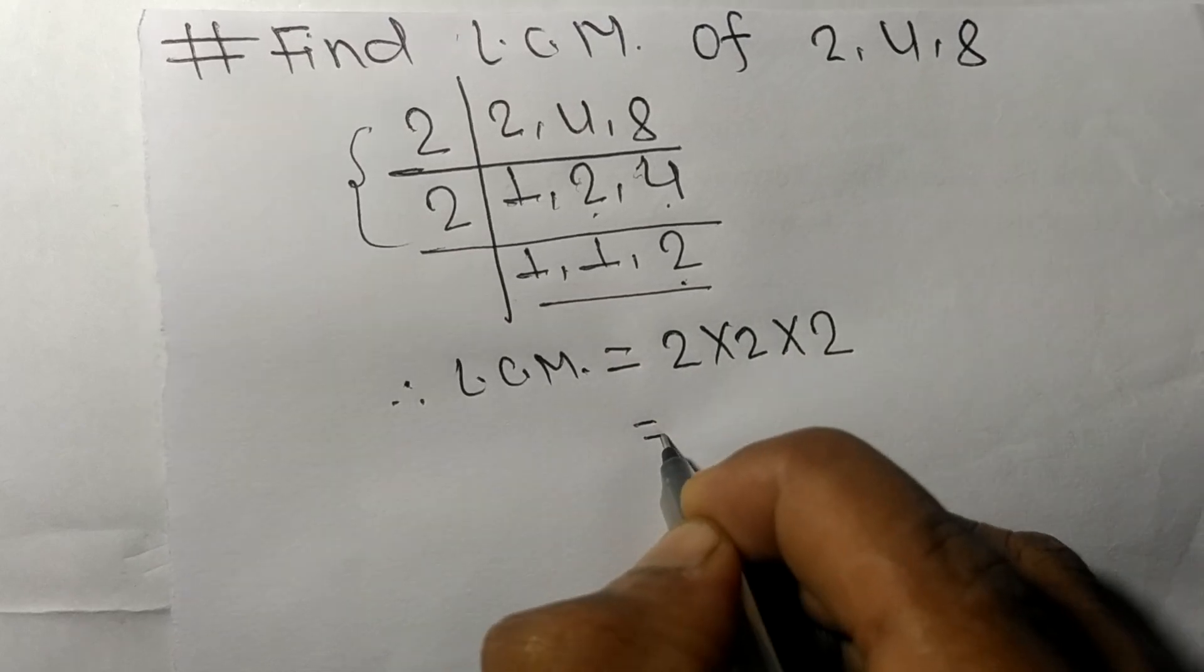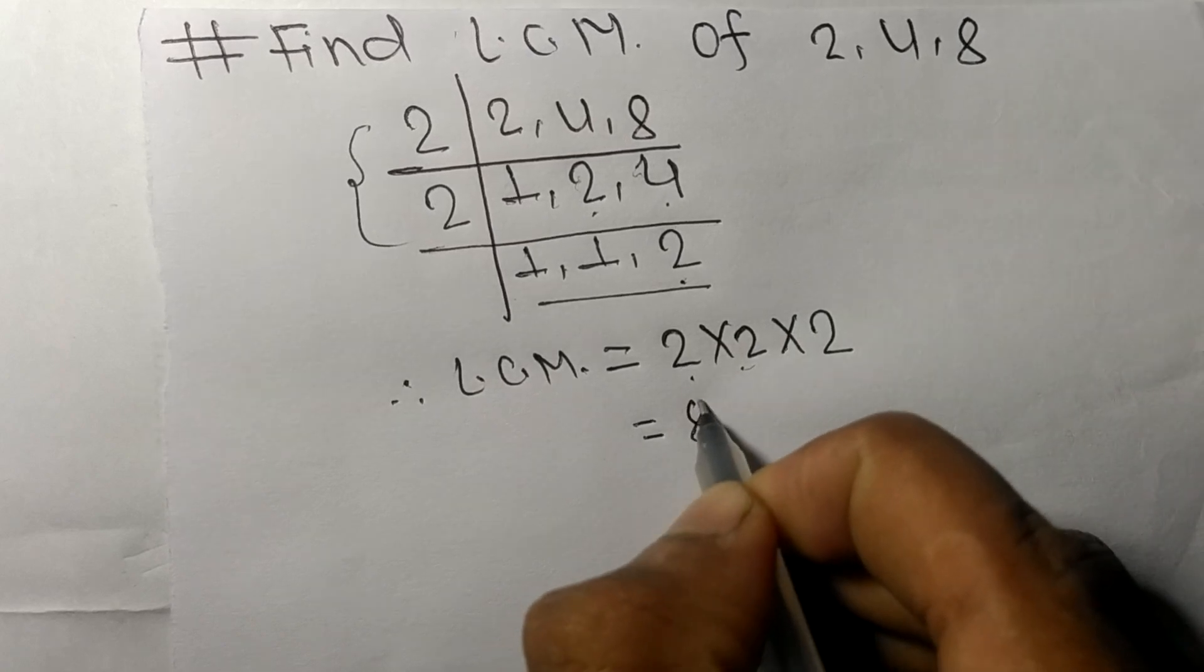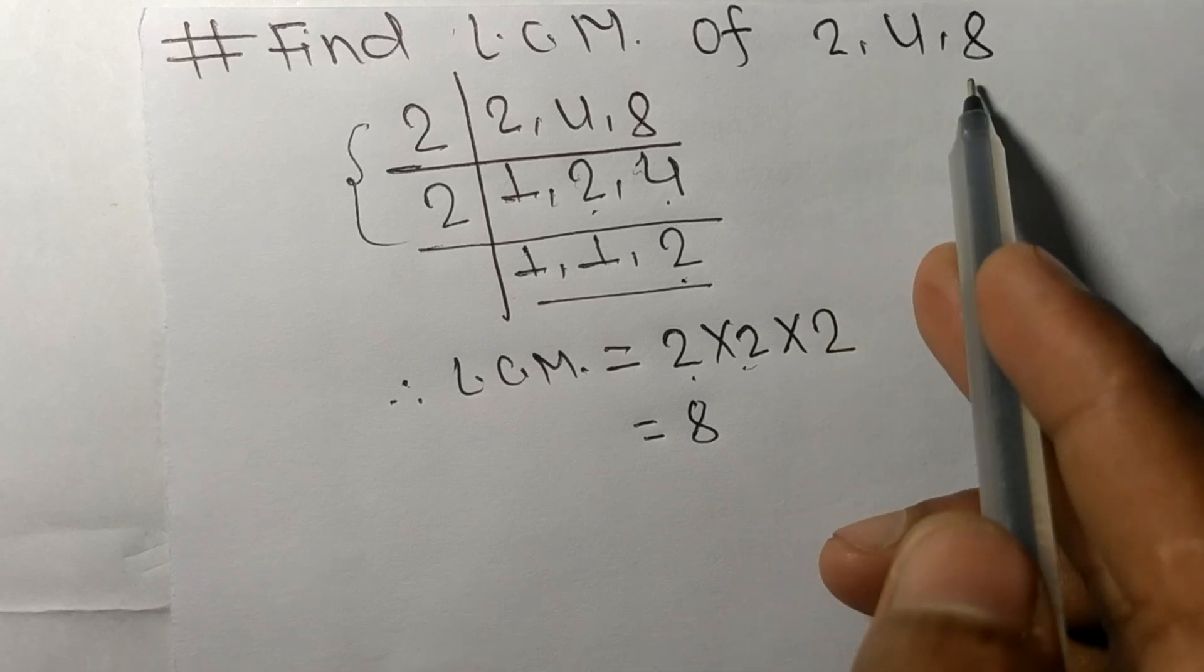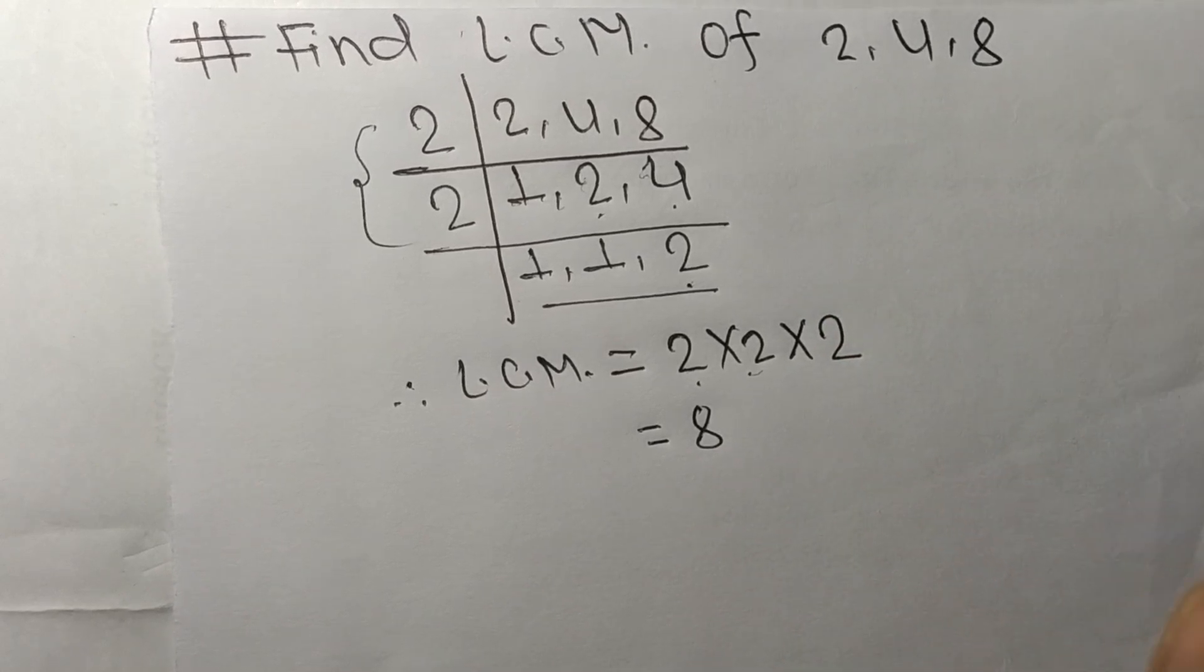So we take here 2, so 2 times 2 means 4, 4 times 2 means 8. So it is the LCM of 2, 4, and 8. This much for today and thanks for watching.